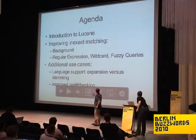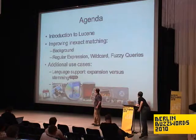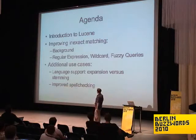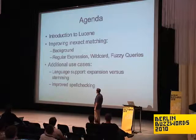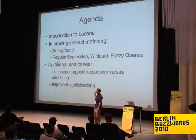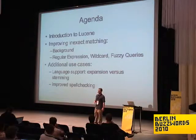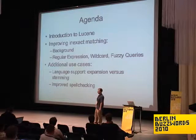Starting with the agenda: I'm going to introduce Lucene, give a high-level discussion of how a search works, then talk about how we can improve inexact matching. Examples include regular expressions, wildcards, and things like that. I'll give some more advanced use cases and an example of how you can use this API yourself to do an advanced inexact query, and some ideas like spell checking to improve things for a distributed case.